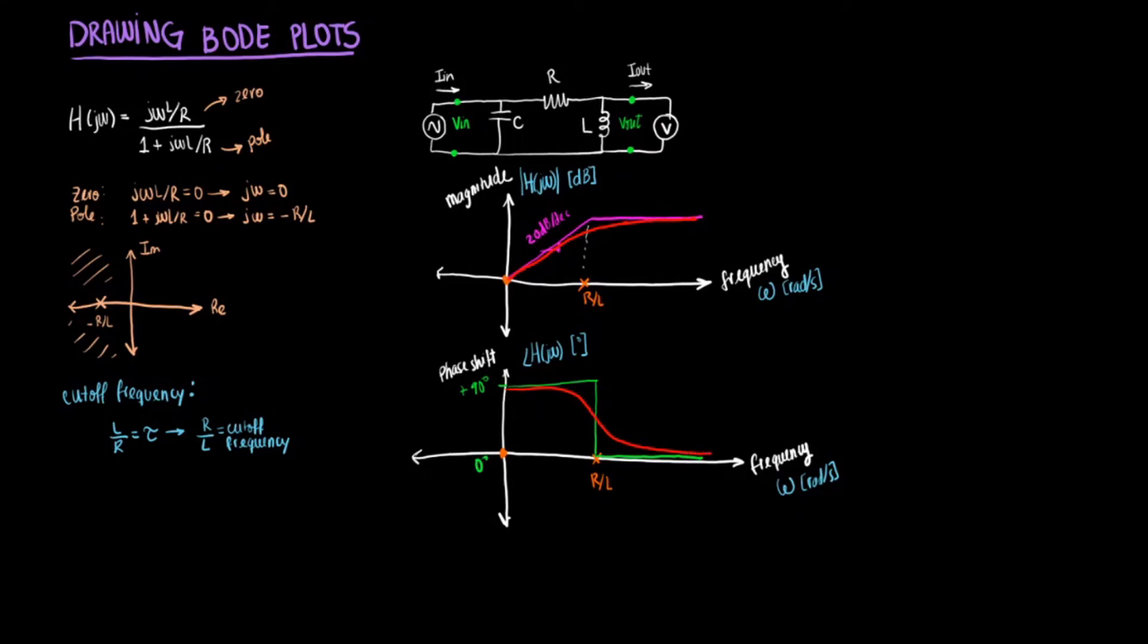Now, just to keep in mind, I'm going to write down here: when you get a zero, you get a positive 20 decibel per decade change in the slope. When you get a pole, you get a negative 20 decibel per decade change in the slope. For the phase shift, when you have a zero, you get a positive 90 degree change. When you get a pole, you get a negative 90 degree change. Just keep this in mind.